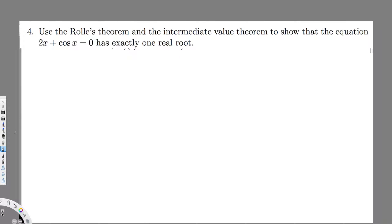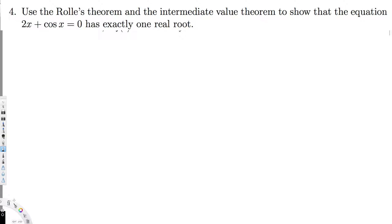This problem is asking us to use Rolle's Theorem and the Intermediate Value Theorem to show that the equation 2x plus cos x equals 0 has exactly one real root.